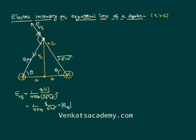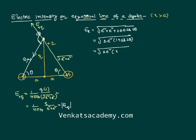Now I have two vectors equal in magnitude separated by an angle of 2 theta. Using the parallelogram law, the resultant is: E_resultant = √(E₁² + E₂² + 2·E₁·E₂·cos2θ). Since E₁ = E₂ = E, this simplifies using the identity 1 + cos2θ = 2cos²θ, giving E_resultant = 2E·cosθ.